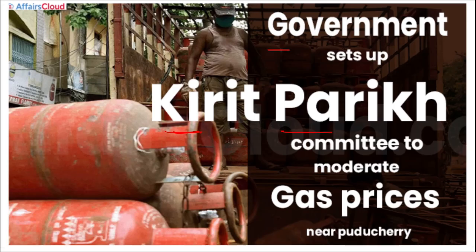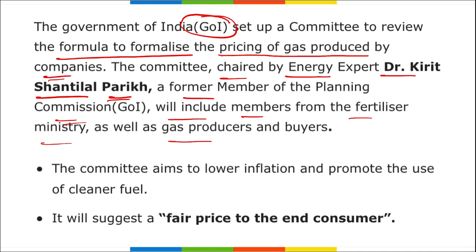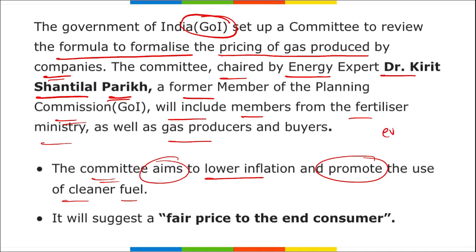The committee aims to lower inflation and promote the use of cleaner fuel. The government wants fuel prices to come down, just as electric vehicle prices have gradually decreased from around 15–20 lakh rupees per vehicle after subsidy when initially launched, with costs falling as research, development, and awareness have grown.